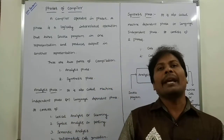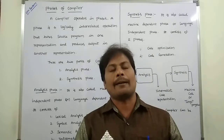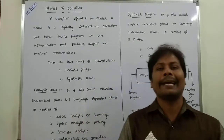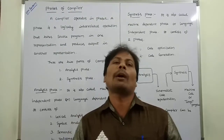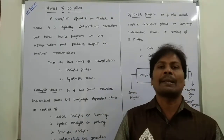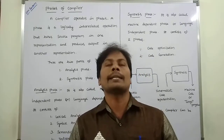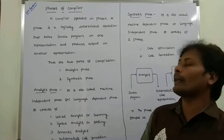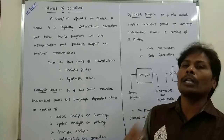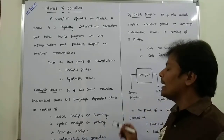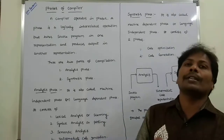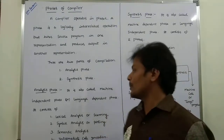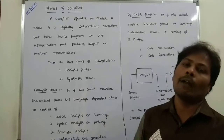The analysis phase mainly consists of four phases of the compiler. First one is lexical analysis or scanner, second one is syntax analysis or parsing, third one is semantic analysis, and fourth one is intermediate code generation. These four phases are independent of the machine on which the program is executed, but depend on the language.